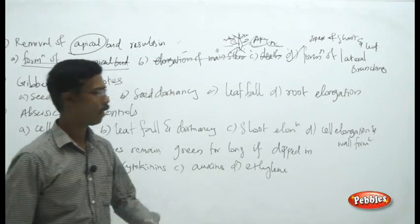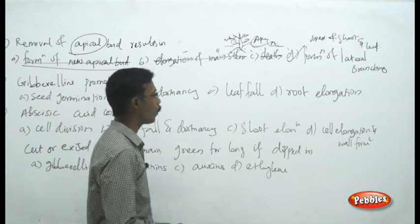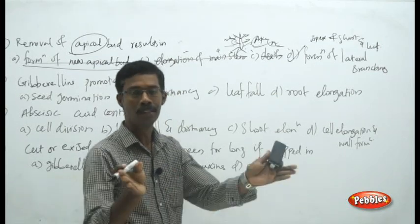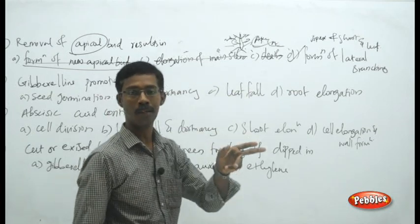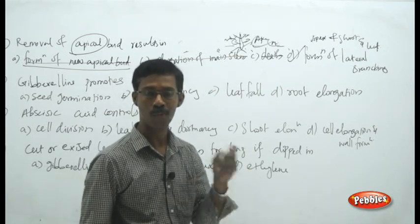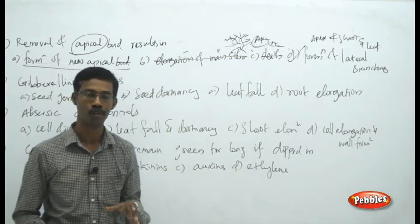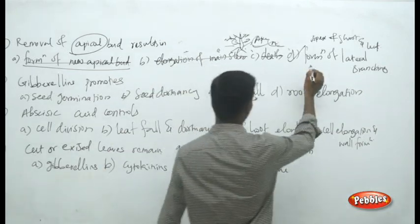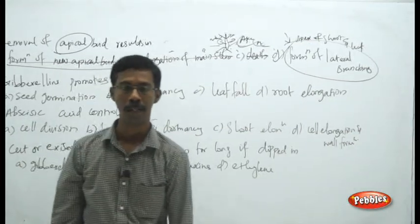When you remove the tip of the shoot or root, it will automatically promote the growth of branching from the stem. The branching was suppressed by the concentration of auxins. Removing the root tips and shoot tips removes the apical dominance by auxins, enhancing the formation of lateral branching.